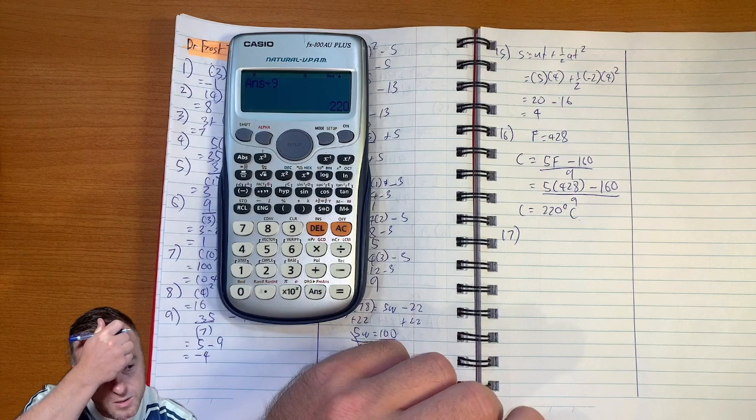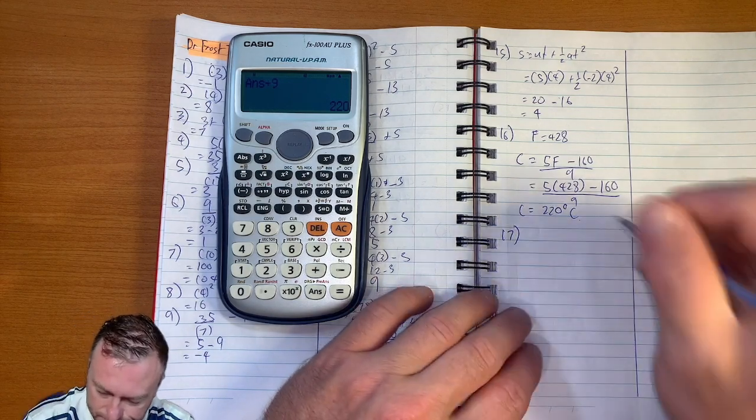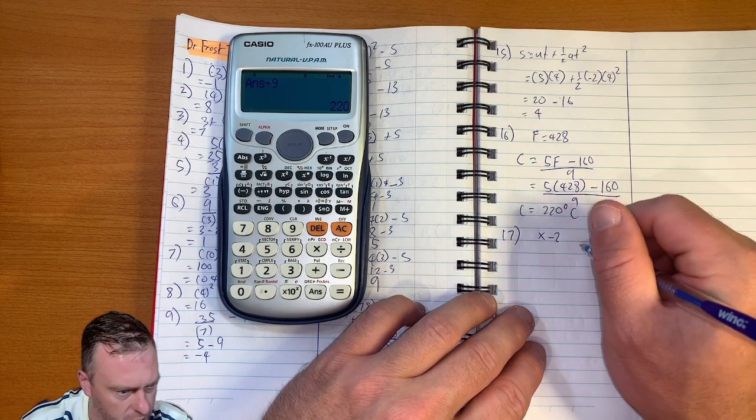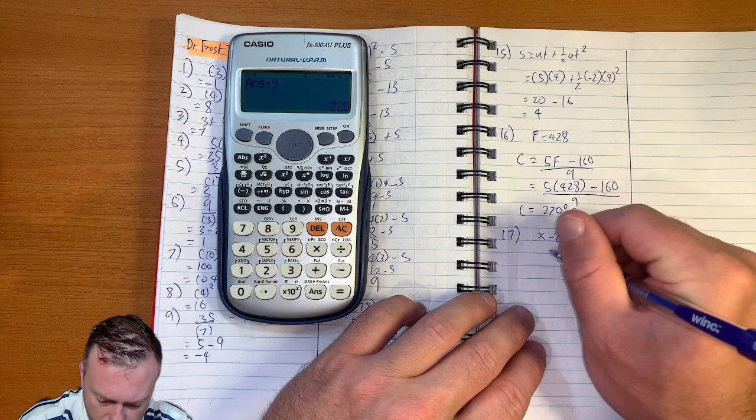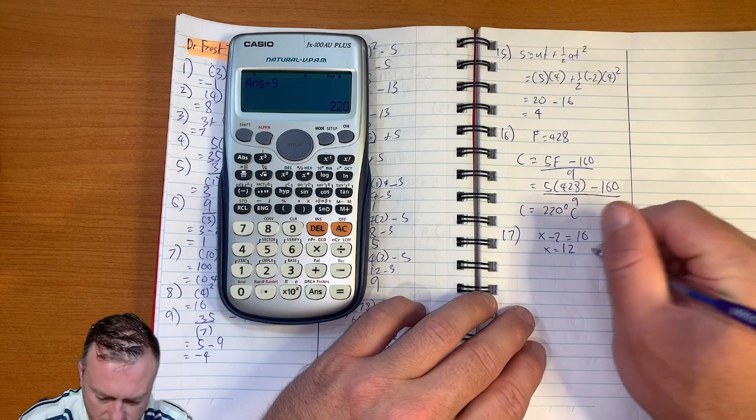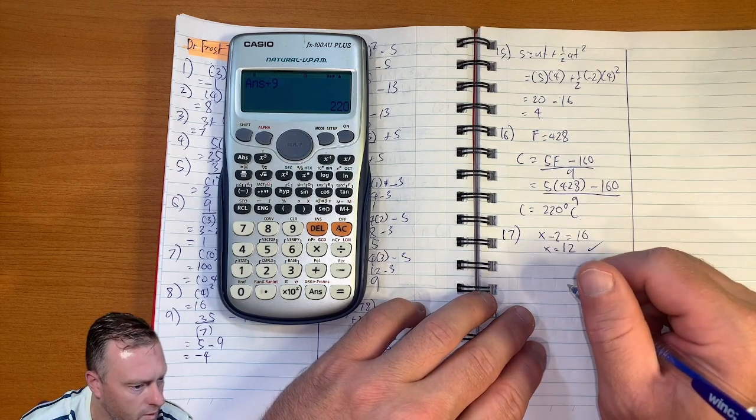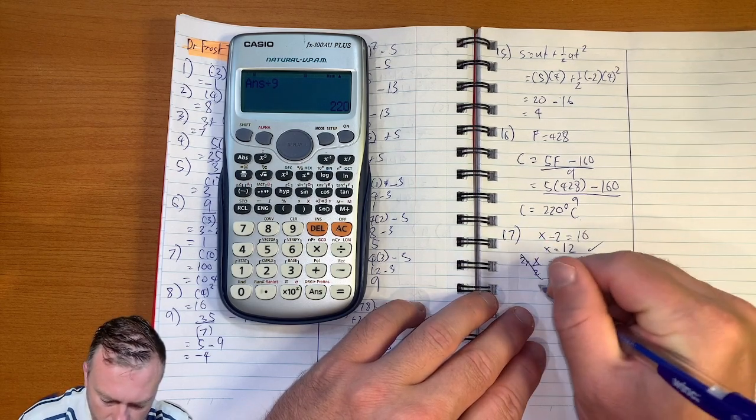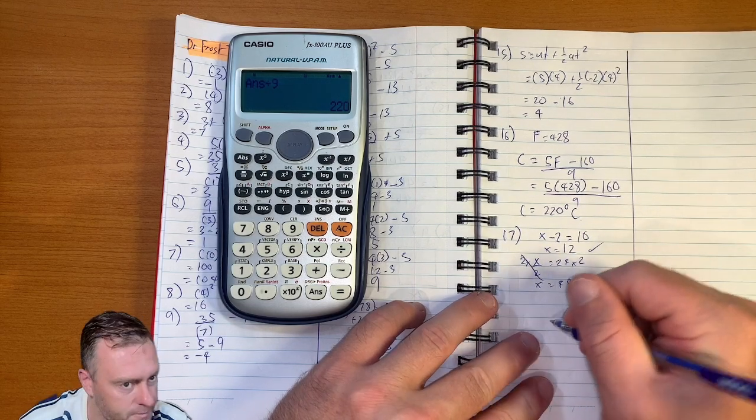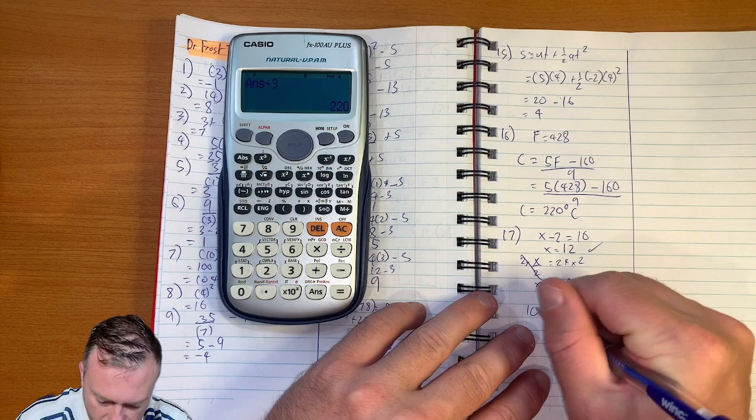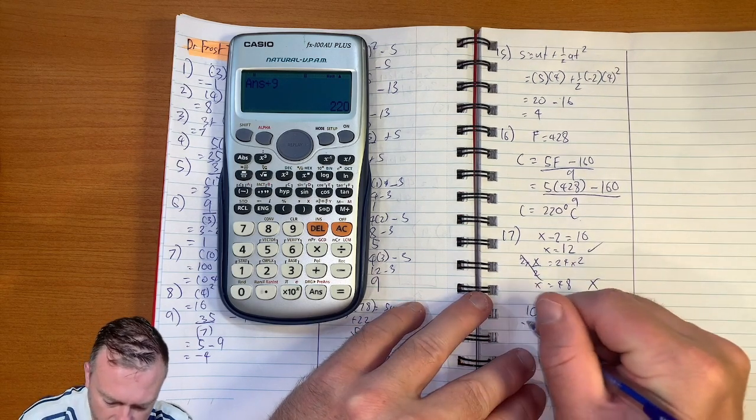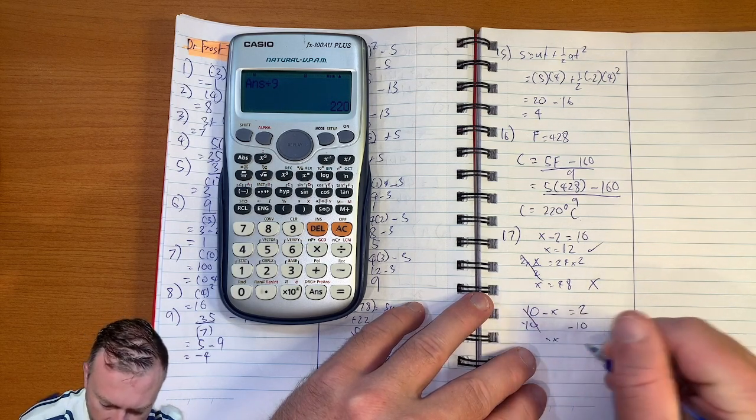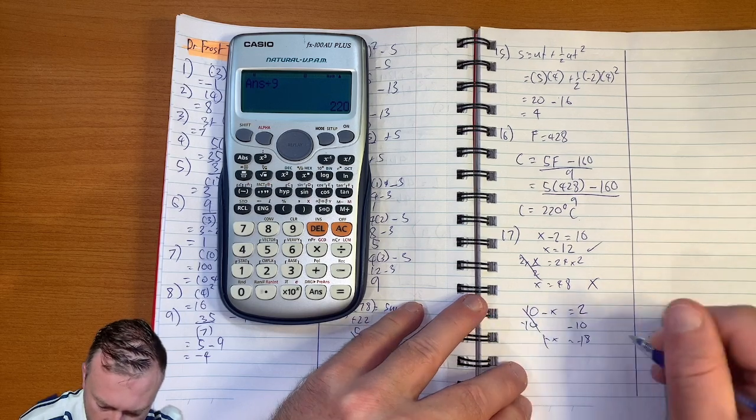17. How many of these solutions have the equal to 12? X minus 2 equals 10. X equals 12. So that's one. X on 2 equals 24. Times this side by 2. Times this side by 2. So X equals 48. So that's not one. 10 minus X equals 2. So take 10. So negative X equals negative 8. So that's not one.